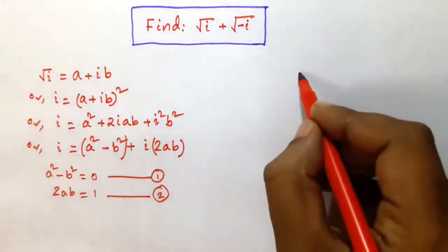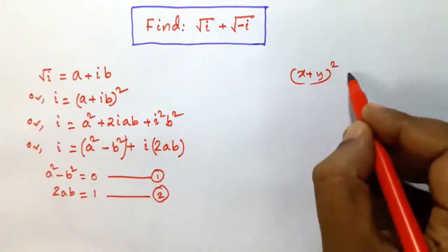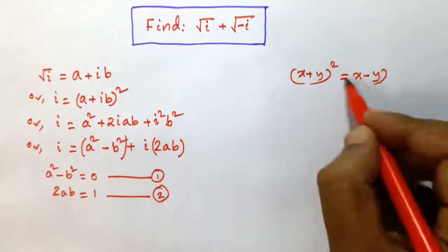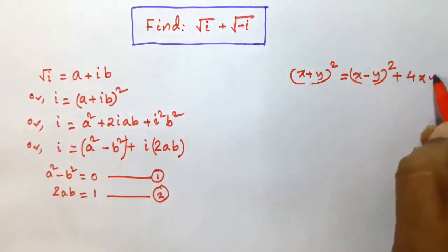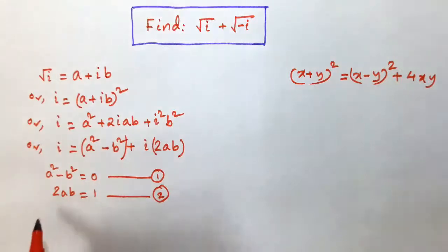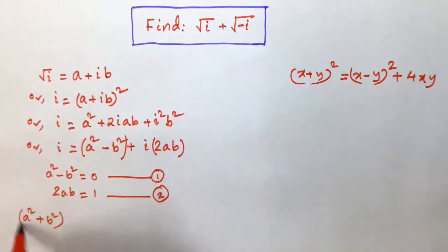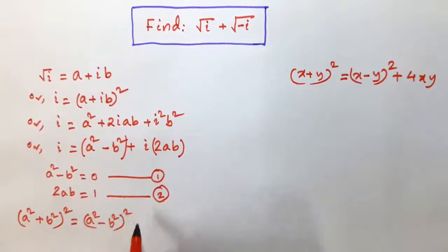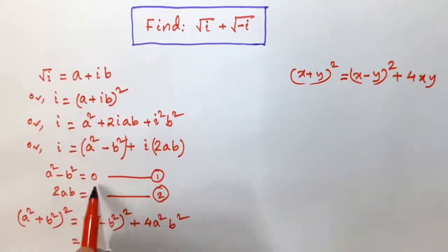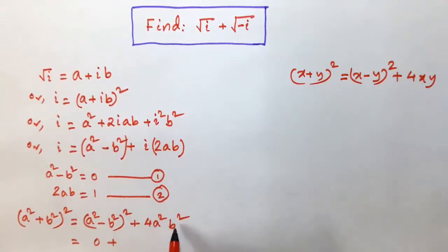Now, we know that (x + y) whole square is equal to (x minus y) whole square plus 4xy. We shall use this property. So, (a squared plus b squared) whole square is equal to (a squared minus b squared) whole square plus 4a squared b squared. Since a squared minus b squared equals 0, this becomes 0 plus 4a squared b squared, which means (2ab) whole square.